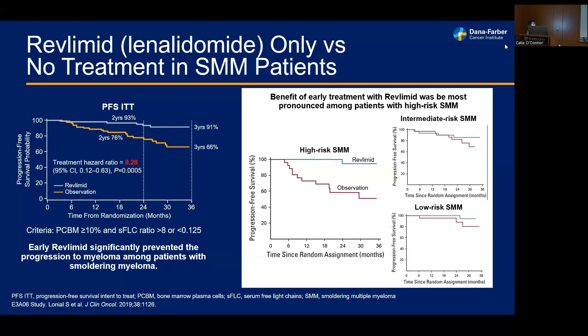When patients were split by risk categorization, those with high-risk smoldering myeloma appeared to have the most pronounced benefit from early Revlimid intervention compared to intermediate or low-risk patients, whose progression-free survival curves seemed to overlap. The ECOG study has not yet demonstrated a difference in overall survival compared to the Spanish study, which may be reassuring in that not as many patients have passed.